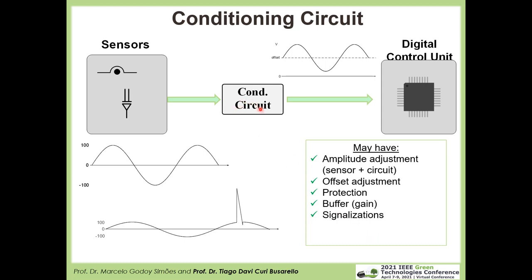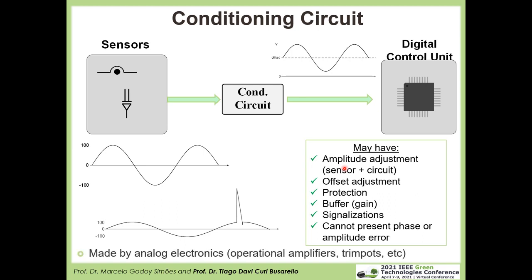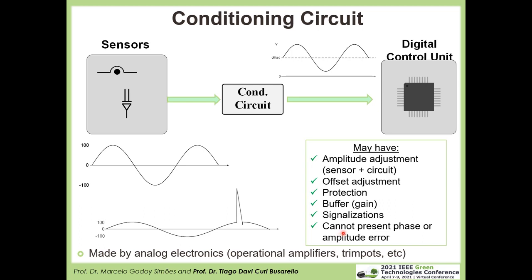Signalization is common in our conditioning circuit. One of the most important constraints when designing this circuit is that it cannot introduce phase or amplitude error. We are measuring an alternating current that is translated into a smaller signal with offset, but the phase delay cannot exist — the zero crossing must be the same and the amplitude must be accurate. All of these functions can be implemented using analog electronics like operational amplifiers, trim pots, resistors, and capacitors.